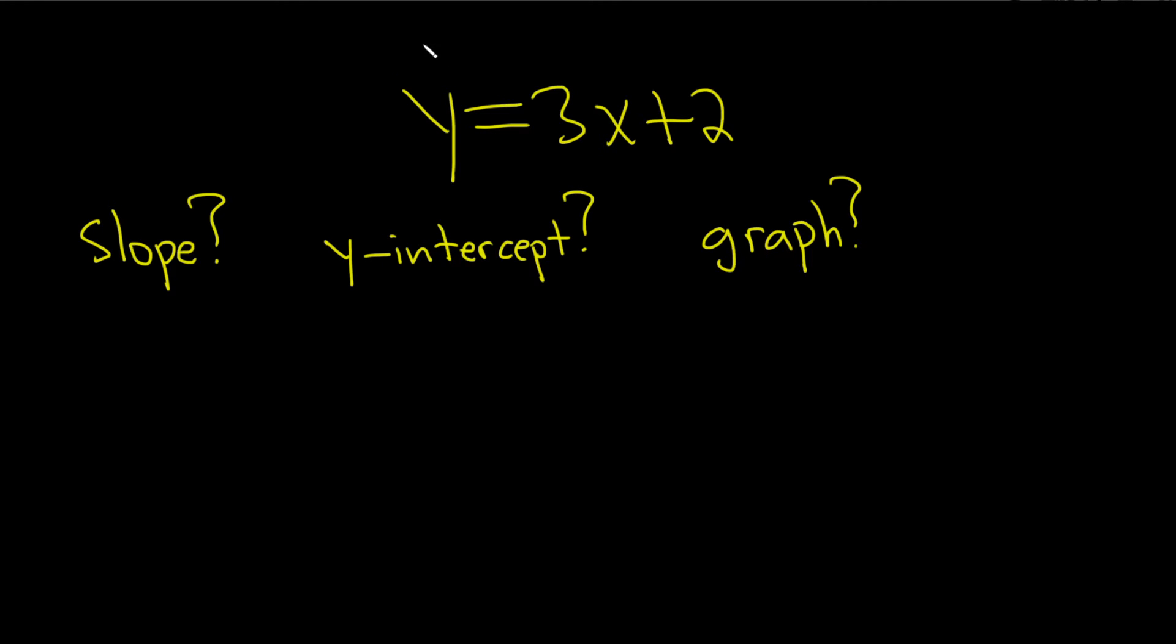So first note that this is already in the really nice form, y equals mx plus b. So we already have it in that form. And just using matching you can see right away that m is equal to 3. And so that answers the first question. That's the slope.